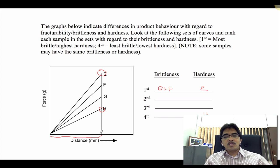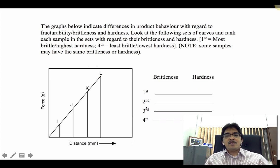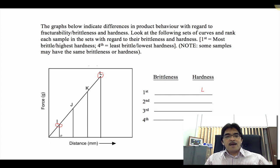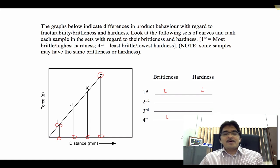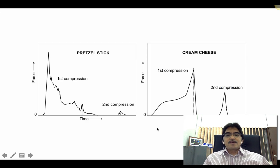For the third set (I, J, K, L), L has the highest peak and I the lowest, so hardness ranks L > K > J > I. For brittleness, I travels the shortest distance — most brittle — and L travels the longest — least brittle, with J and K in between. That is how we interpret these force-versus-distance graphs.